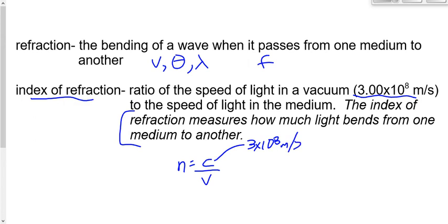The numerator in N = C/V will always be 3 times 10 to the 8 meters per second. The denominator, V, will be equal to or less than 3 times 10 to the 8 — never more. That means N will always be equal to or greater than 1. The further N is above 1, the more light will bend. The closer it is to 1, the closer it is to air or a vacuum, and the less it will bend.